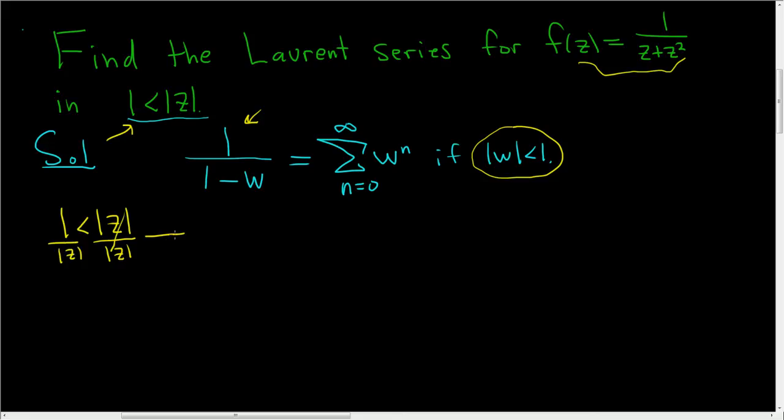And so we end up with 1 over z modulus less than 1. So now we'll take our function f of z, which is 1 over z plus z squared, and we have to manipulate this so that we have a 1 over z term in the denominator down here.